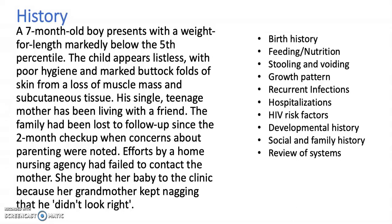Let's take a look at a history and see if we can pick out some key features. A seven-month-old boy presents with a weight for length markedly below the fifth percentile. The child appears listless with poor hygiene and marked buttock folds of skin from loss of muscle mass and subcutaneous tissue. His single teenage mother has been living with a friend; the family has been lost to follow-up since the two-month check-up when concerns about parenting were noted. Efforts by a home nursing agency had failed to contact the mother — she brought her baby to the clinic because her grandmother kept nagging that he didn't look right.